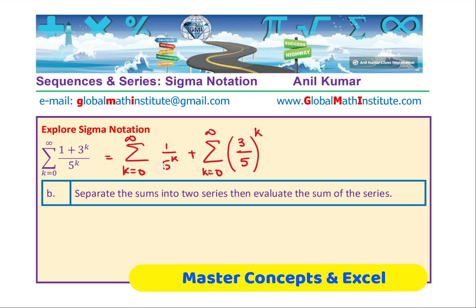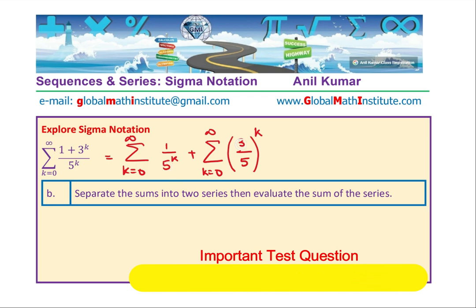So we have sum of two series, and both are infinite series, and therefore it is easy to find their sum. So in the first one, we have a geometric series where A is 1 over 5, and it is being multiplied by 1 over 5 each time, and here we are multiplying by 3 by 5, where A is this.